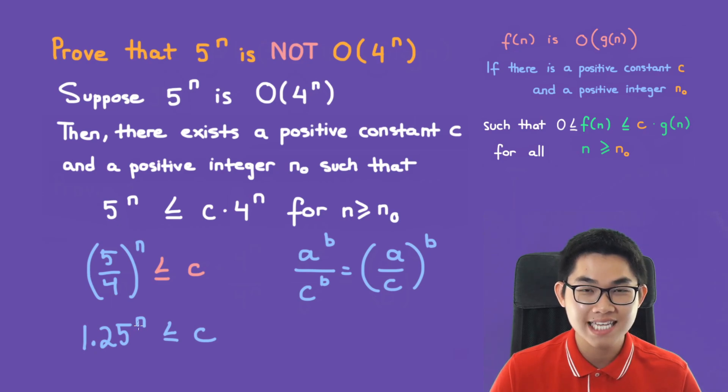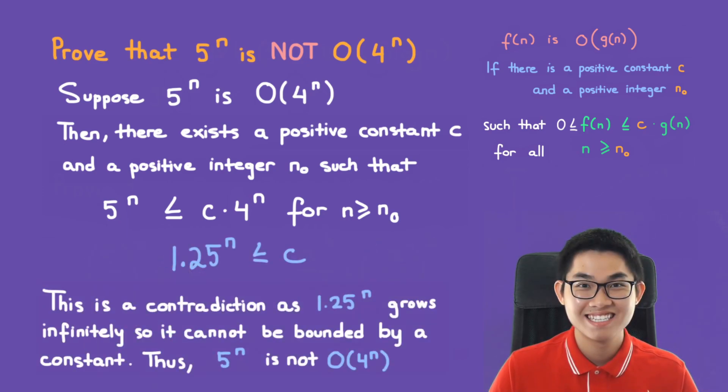So this is a contradiction because 1.25^n is an exponential function, and an exponential function cannot be less than a constant. It's supposed to be the other way around. This is a contradiction as 1.25^n grows infinitely, so it cannot be bounded by a constant.